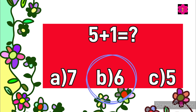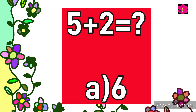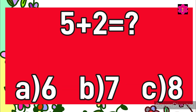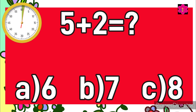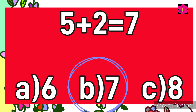Yes, the correct answer is 6. Okay, now the next sum: 5 plus 2 is equal to — A: 6, B: 7, or C: 8. Your time starts now. Yes, correct answer is 7. 5 plus 2 is equal to 7.